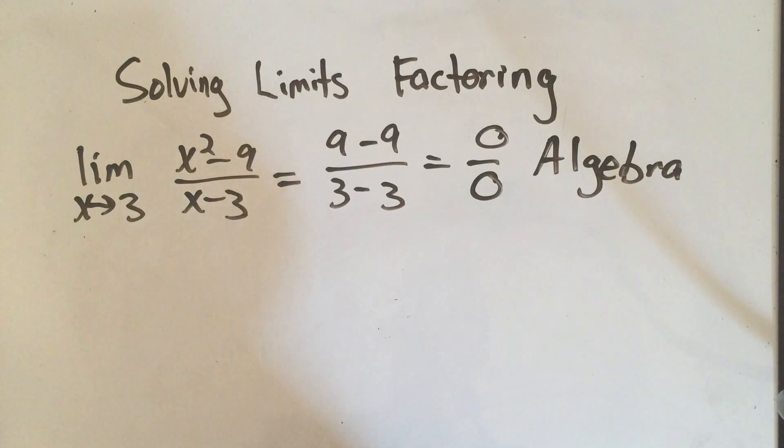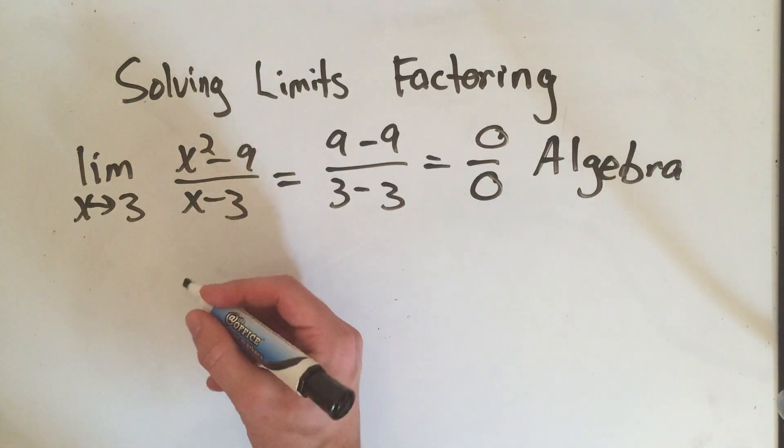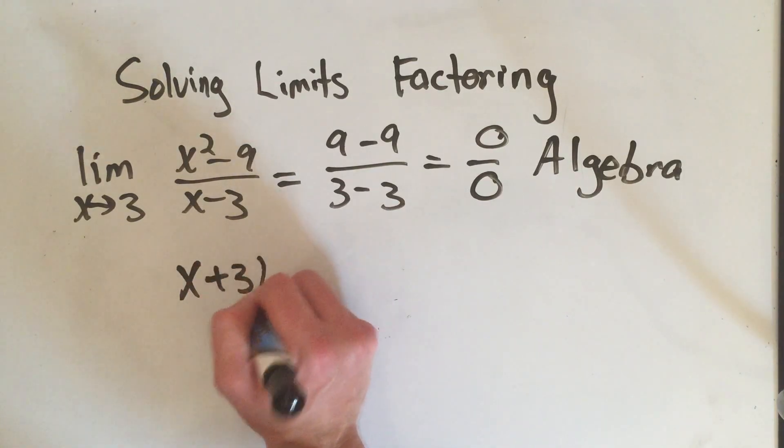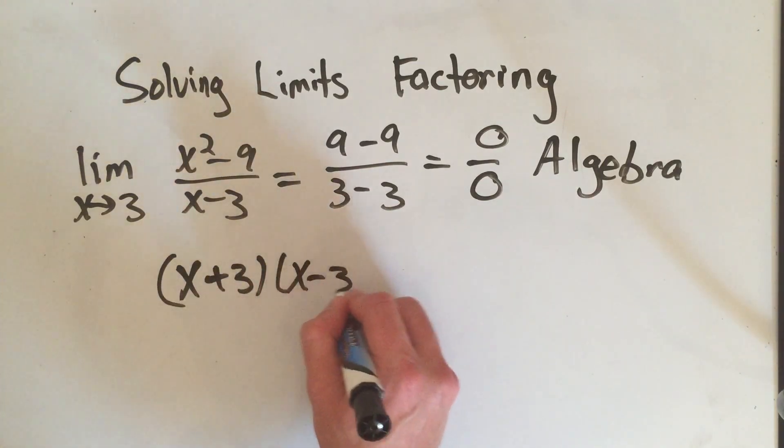X minus, I'm sorry, X squared minus 9. That's a difference of squares. X squared minus 9, that can factor into X plus 3, X minus 3.